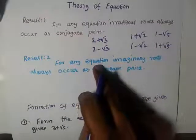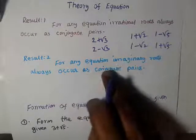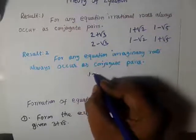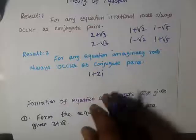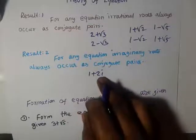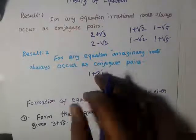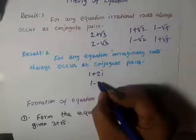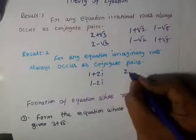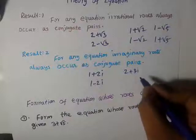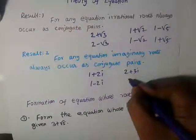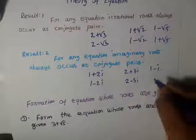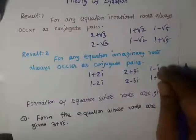That means for any equation, imaginary roots always occur as conjugate pairs. So if 1 plus 2i is a root, then the conjugate, just a sign change, gives 1 minus 2i. Similarly, if the root is 2 plus 3i, then its conjugate is 2 minus 3i. And if 1 minus i is a root, its conjugate is 1 plus i. These are the examples.